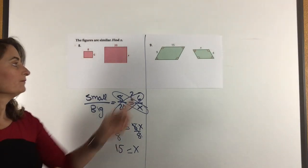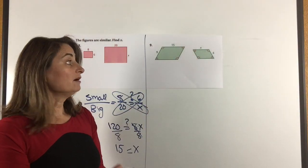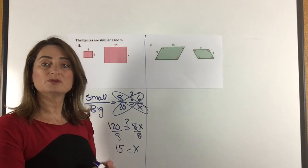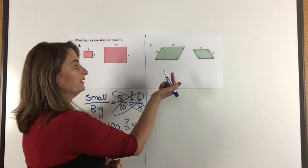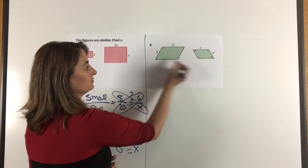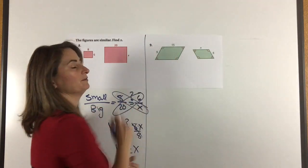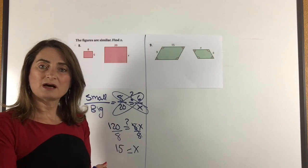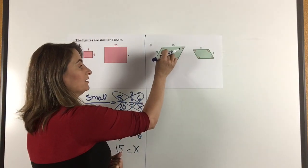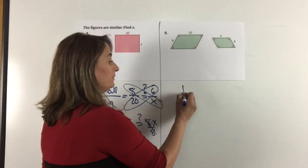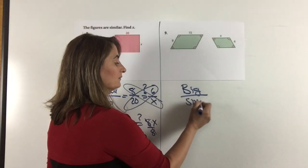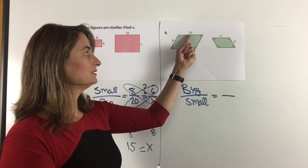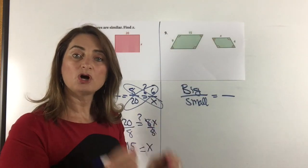They are similar because all corresponding angles are congruent and all corresponding sides are proportional. I know the corresponding angles are congruent because of the two dashes here and here, and one dash here and here — that means they are all congruent. Now set up your ratio because the side lengths are proportional. This time I'm going to set my ratio big to small, making sure to use the big side on top and the small side on the bottom consistently.